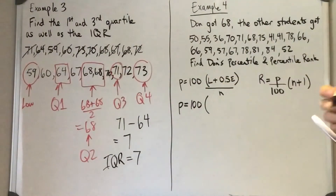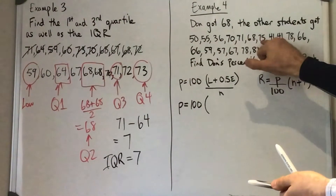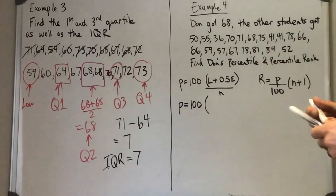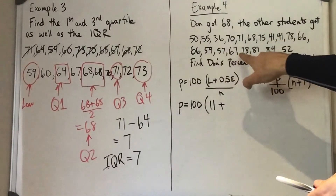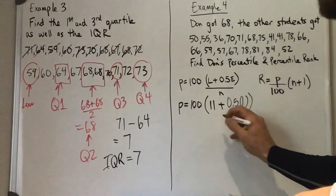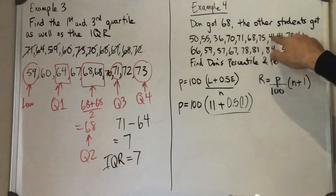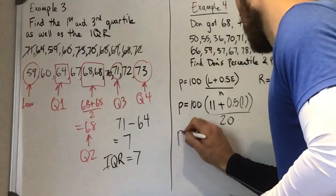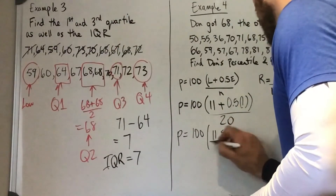Now we need to find how many values are lower than 68. I count 1, 2, 3, 4, 5, 6, 7, 8, 9, 10, 11 — so 11 values are lower. How many 68s are in there? I see just the 1, so there's 1 that is equal. And how many in total? 1 through 20 — we have 20 total entries. So our percentile is going to be 100 times 11.5 over 20.